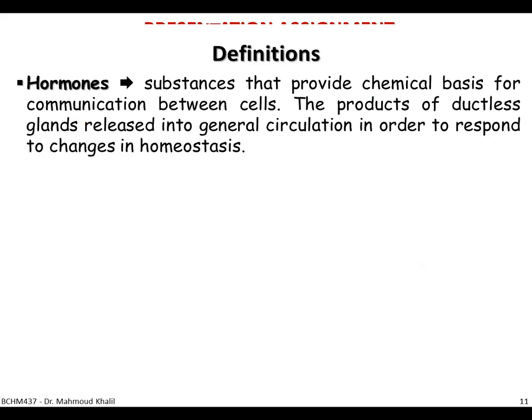As a general definition, hormones are substances or chemicals that provide the chemical basis for communication between cells. They are the products of a ductless gland and are released into the general blood circulation in order to respond to changes in homeostasis. Our body maintains homeostasis, and once it is altered, it needs to be adjusted by regulating hormone levels in the circulating blood.